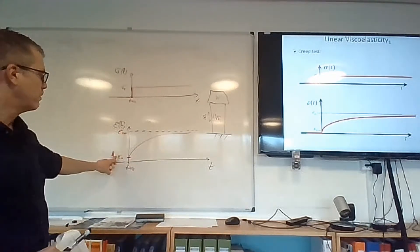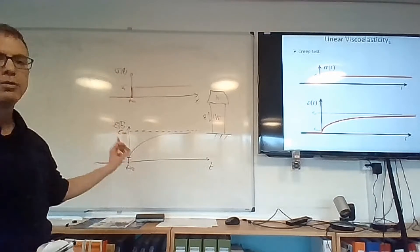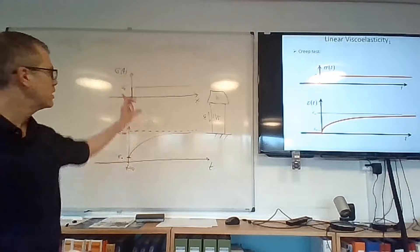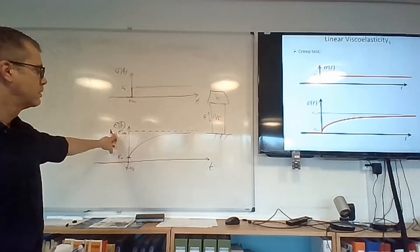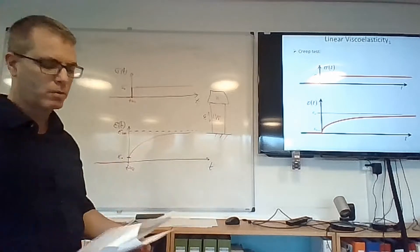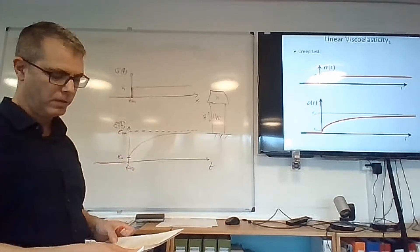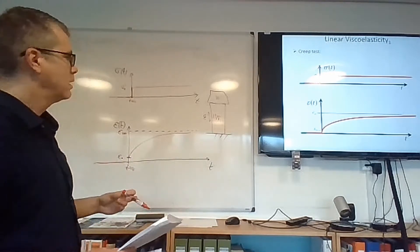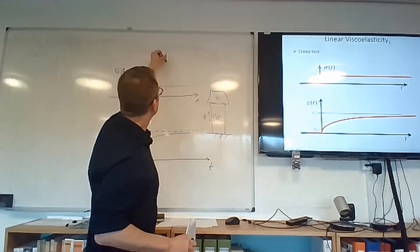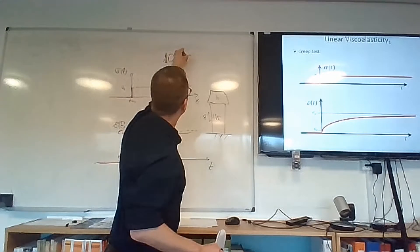So we have epsilon zero and epsilon infinity to represent the instantaneous response. This is the strain that happens the moment that you apply the stress. And this is the strain that appears after a very long time. A very long time, I mean, could be weeks, could be months, could be years, depending on the material itself. And this is 1D view of viscoelasticity. So, 1D behavior.